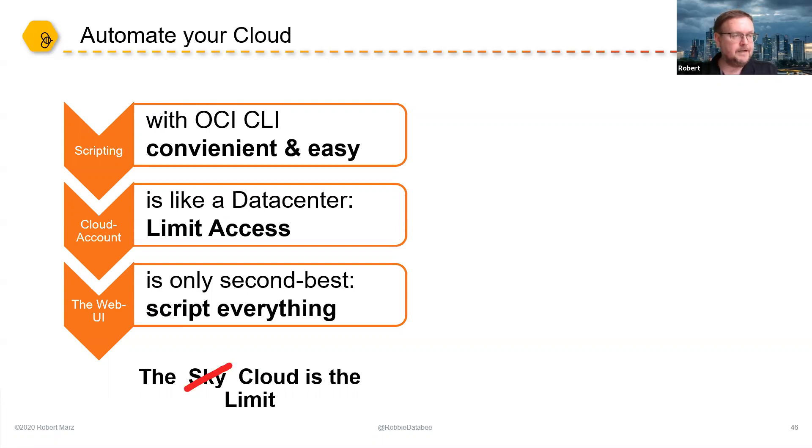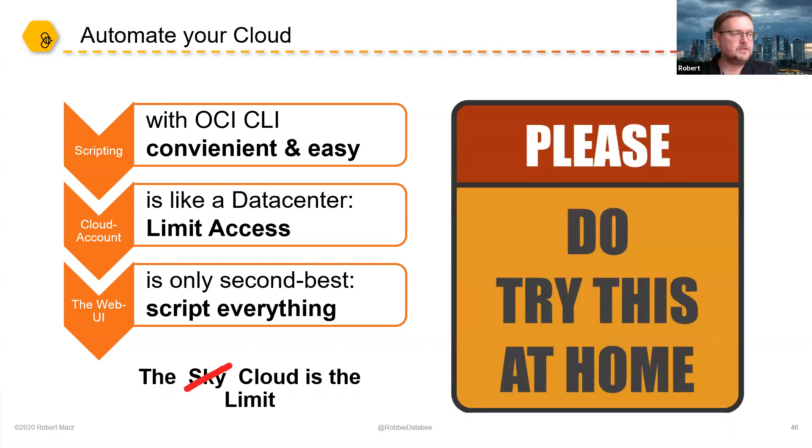Please automate your cloud. Scripting with the OCI CLI is very convenient and easy - you can get help at any point and press Tab to see options. Your cloud account is like a new data center and you want to limit access to it. The web user interface is only second best for provisioning cloud resources. Please script everything, and if you do that, only the cloud is the limit. My final message: please do try this at home and give it a chance. Thank you very much.